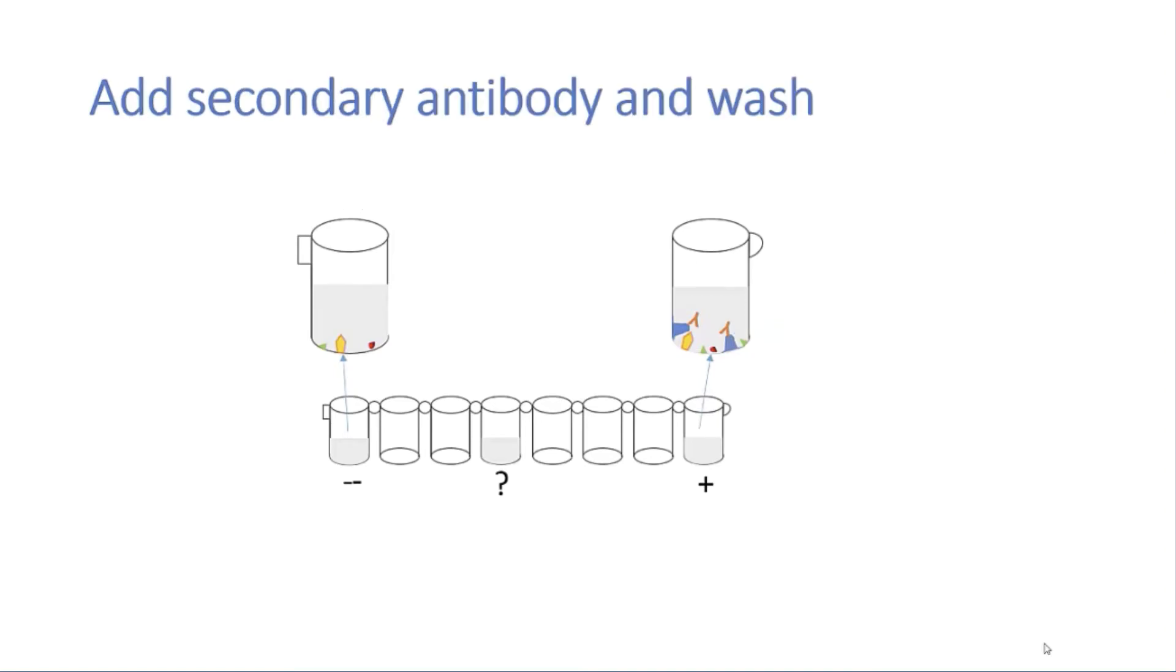The secondary antibody is then added and washed in the same way. The secondary antibody will specifically bind to the primary antibody, and after washing only the secondary antibody that's bound to the primary antibody remains. In the last step, the substrate is added and allowed to sit for five minutes. The enzyme will turn the substrate blue.